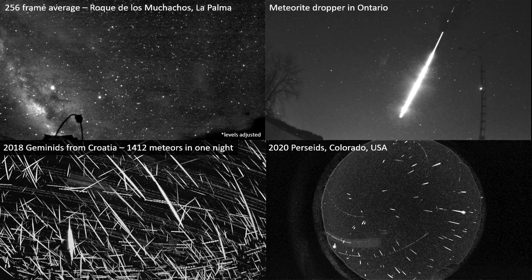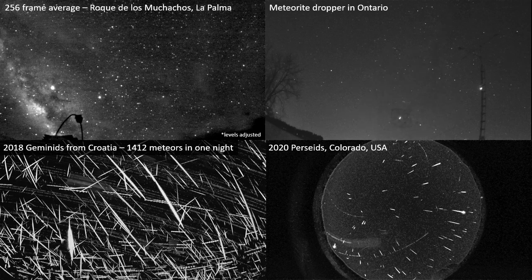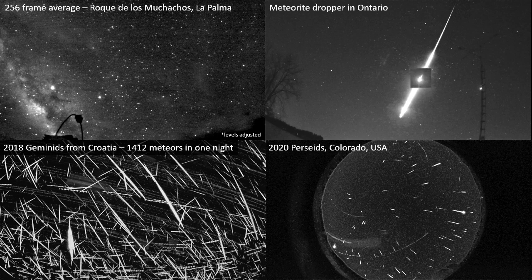These are a few examples of the data we get. If your camera is deployed in a very dark location — for example, in the upper left, this is a camera deployed in La Palma, which has wonderful skies — even with a 3.6 millimeter lens you can get stars down to magnitude seven. We also record a lot of fireballs, or in some cases meteorite droppers. This one from Ontario shows all fragmentation details, the wake, and at the end a couple of little fragments.